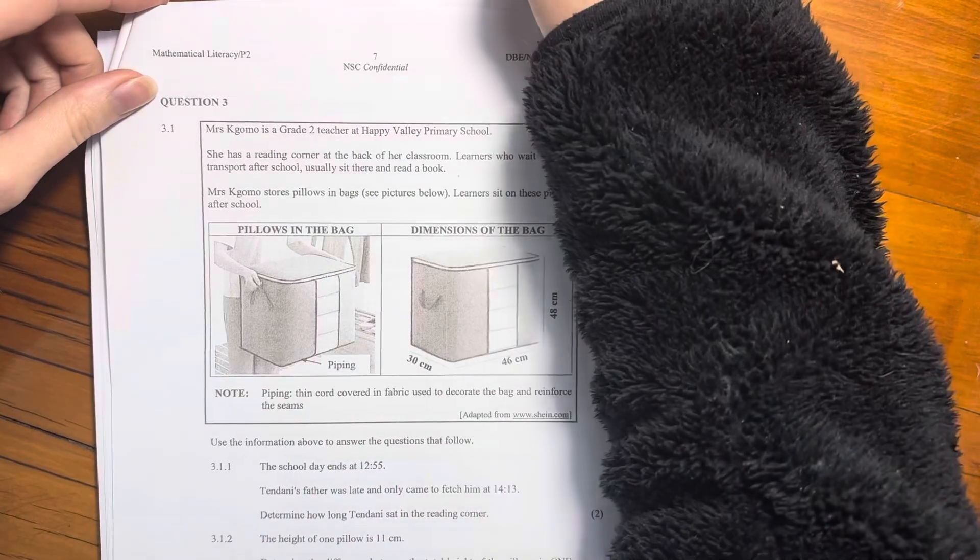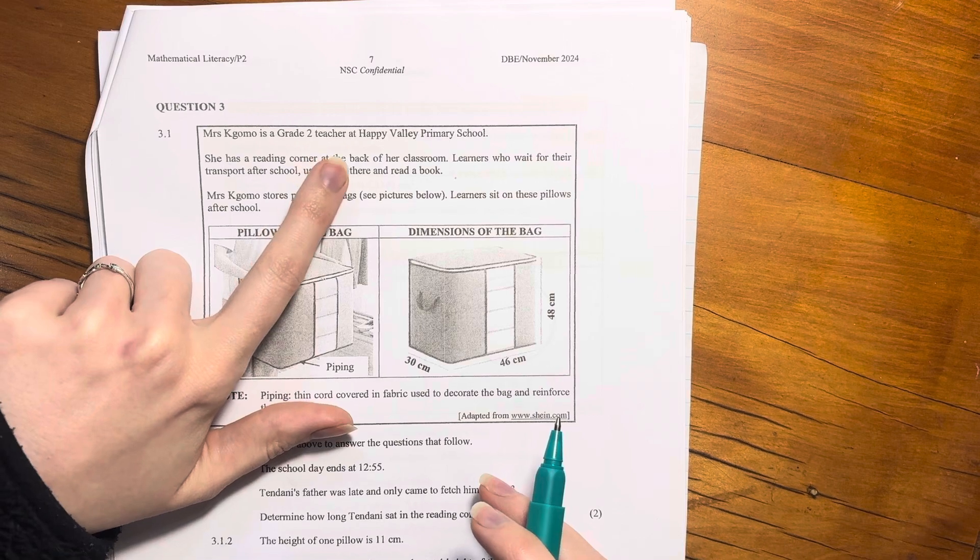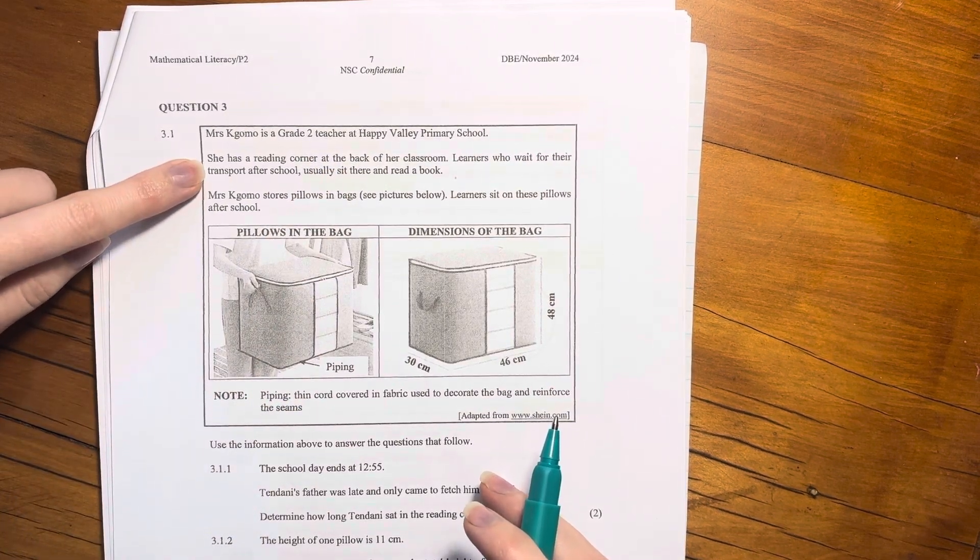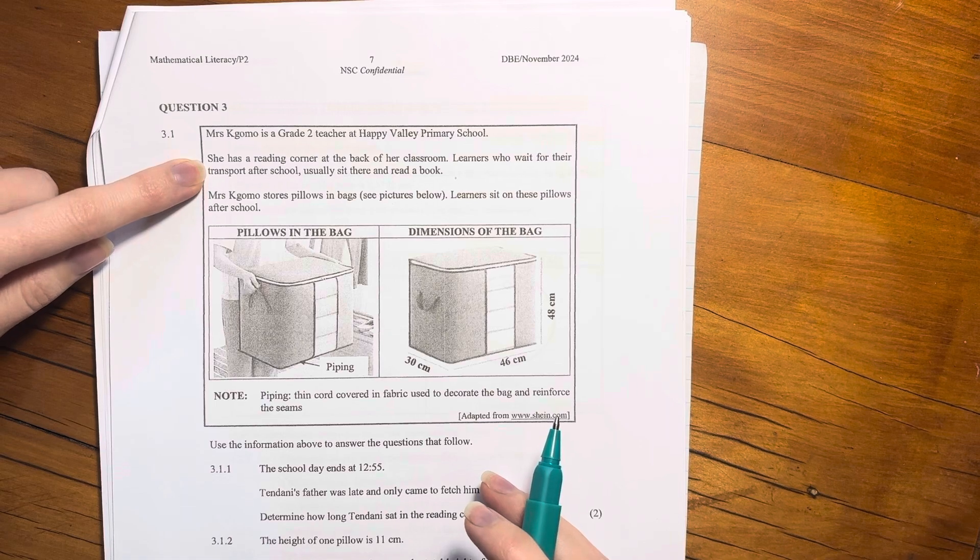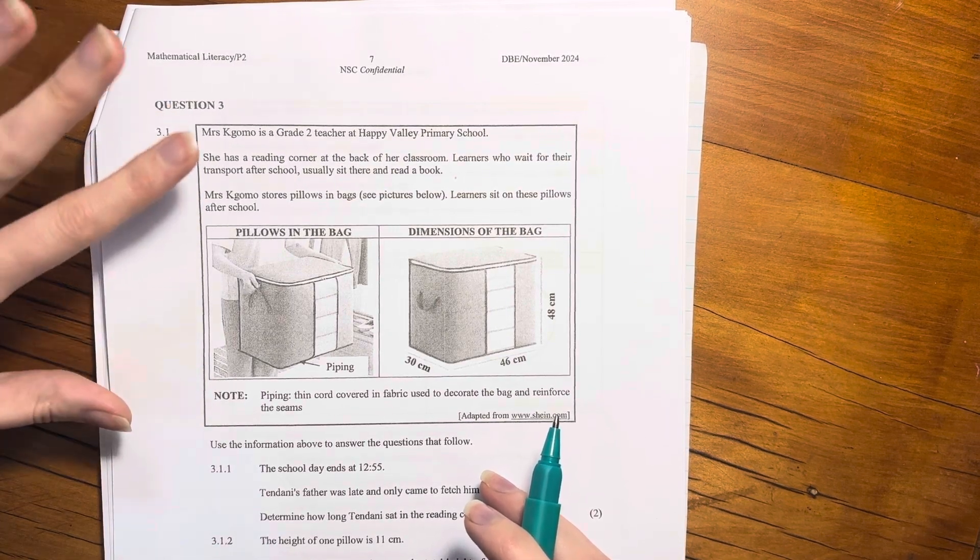All right, let's start question three. So question three says, Mrs. Homo is a grade two teacher at Happy Valley Primary School. She has a reading corner at the back of her classroom.